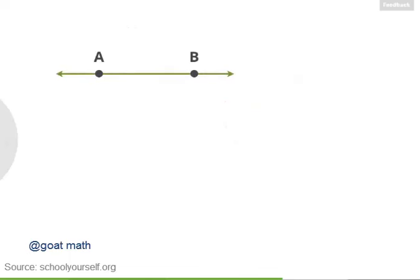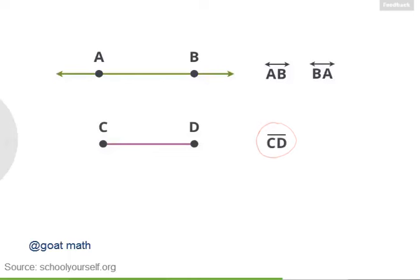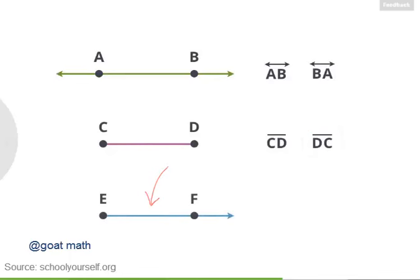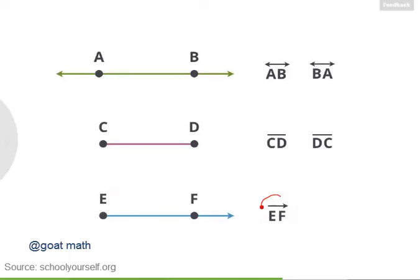Lines are named after any two of their points — so this is line AB, or you could call it line BA. Line segments are named after their endpoints — so this is line segment CD, or line segment DC. But for rays, the name depends on direction. This ray starts at E and goes on forever toward F and beyond, so it's called ray EF. The symbol above the letters has the arrowhead pointing in the F direction. The first letter in a ray's name is always the ray's endpoint, and the second letter is another point on the ray. So FE is not a correct name for this ray — that would be a ray with endpoint F going in the opposite direction.